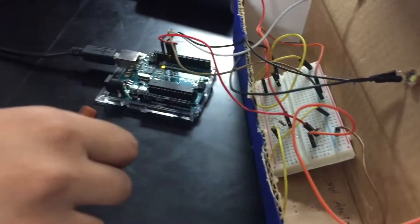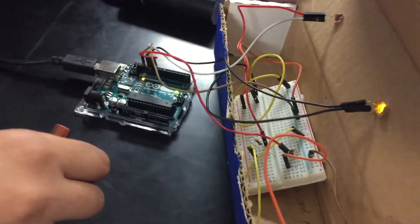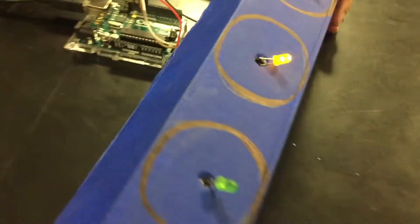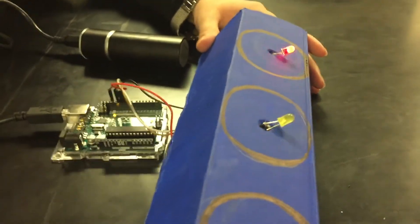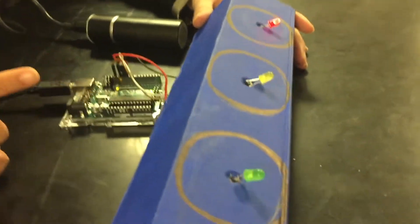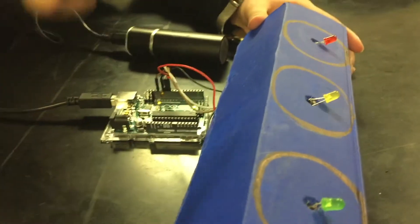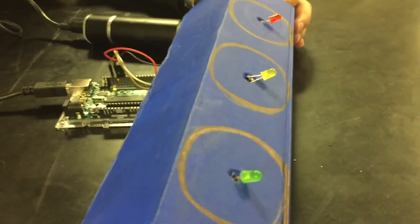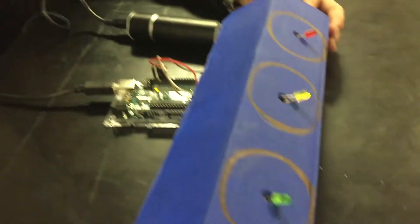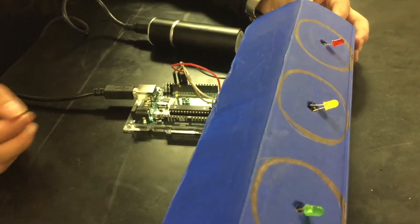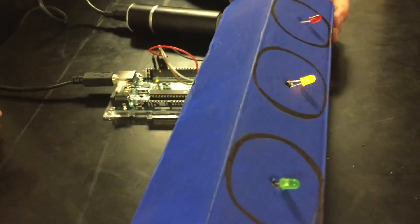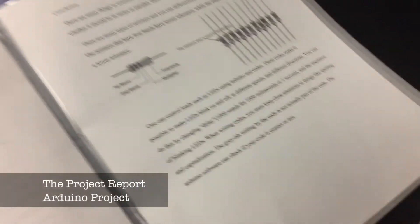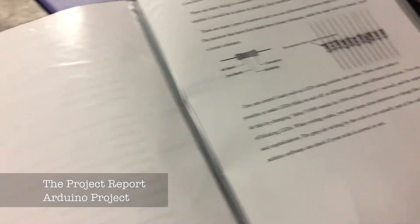It blinks because we can change the blinking rate by the code in the Arduino software. It's the speed at which the energy flows from the Arduino to the LEDs. You control it using code. You can connect this to the laptop using the Arduino software and then control the speed.